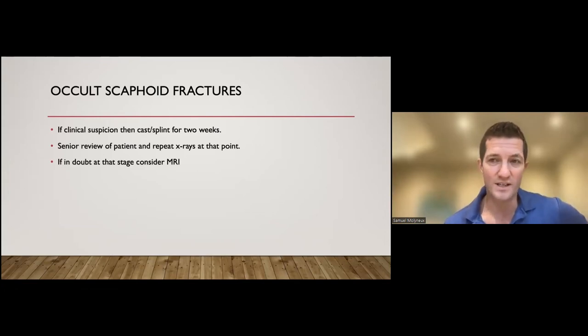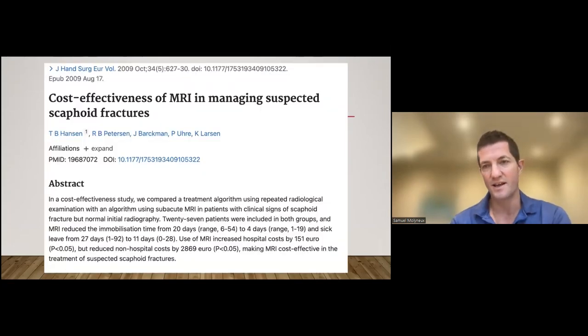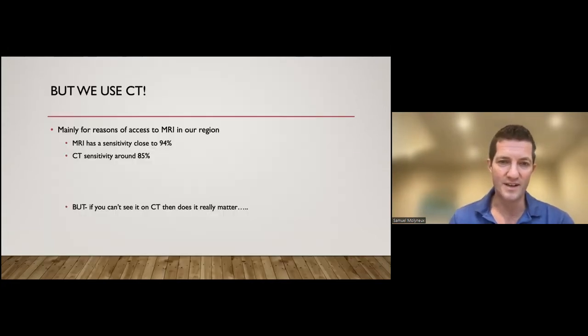What we do here in Edinburgh is actually pretty old school. If somebody is a query scaphoid fracture, we tend to put them into a splint and see them back two weeks later, re-examine them. There'll be a huge load of patients who after two weeks, it's more obvious from the examination that actually it's not a scaphoid fracture. But if they come back at examination and they have those clinical signs of a scaphoid fracture at that stage, we would think about repeat x-rays because often they'll pop up on the repeat x-rays, but they don't always by any means. Then consider an MRI or maybe a CT scan.